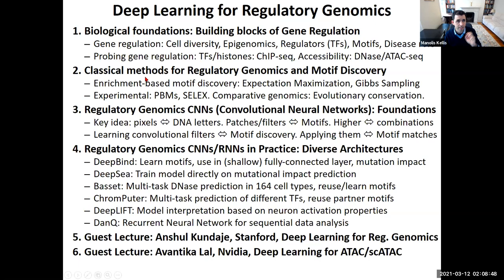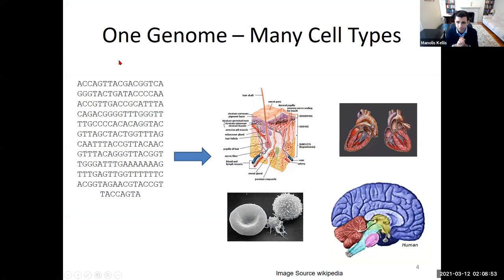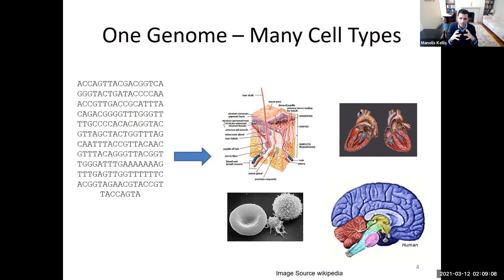Gene regulation is one of the most fascinating areas of science. As a computer scientist, you realize you could write an automaton — a self-contained program written in assembly code. You have three billion letters of assembly code — A, C, G, T — and that code alone encodes all the complexity of a living organism.